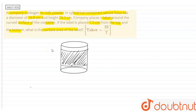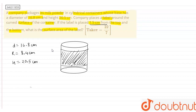Let us draw a rough figure so we can judge that. Here we have drawn the rough diagram according to the question. The diameter of this cylinder is given as 16.8 cm, so the radius comes out to be 8.4 cm. The height is given as 20.5 cm, and the label is placed 1.5 cm below from the top and 1.5 cm from the bottom.